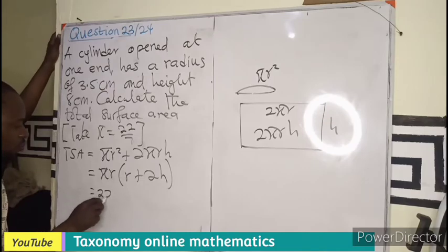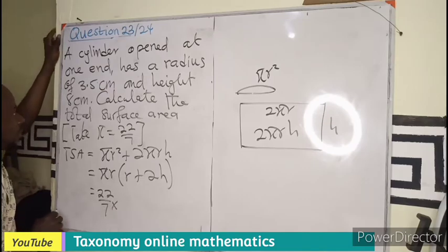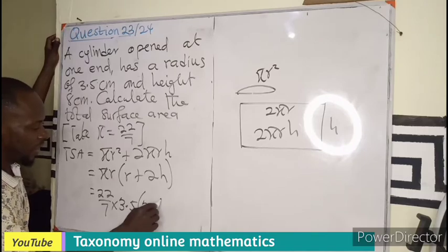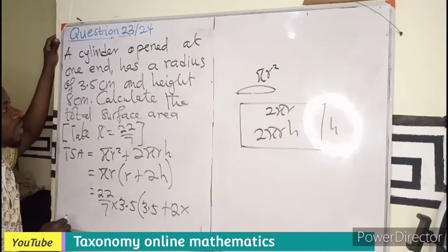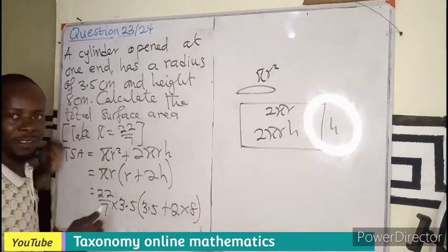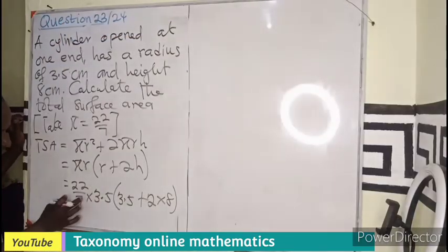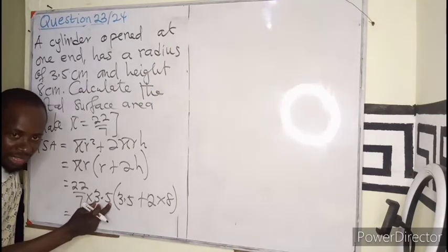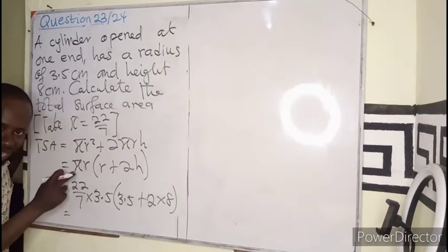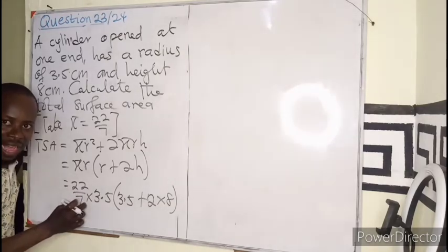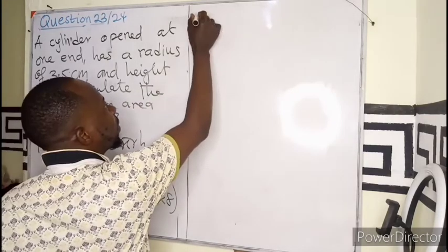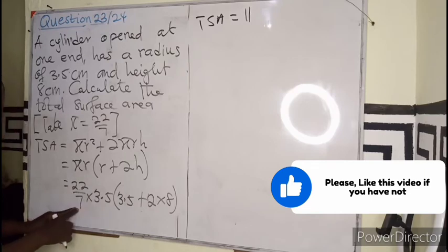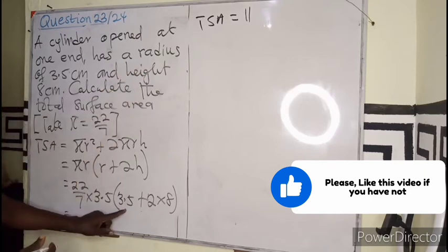Which will be 22 over 7 times radius 3.5 and another radius 3.5 plus 2 times height, which is 8. So the total surface area by multiplication, this is 11 times 2, which is 22. When the 2 multiply 3.5, it gives you 7. 7 times 11 is 77. Divided by 7 will give us 11 from this multiplication.